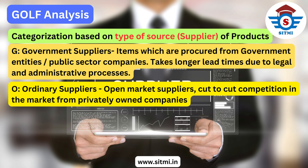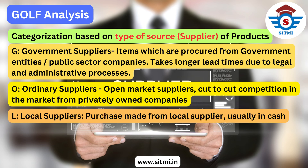The third type of source is L, which stands for local suppliers. These are purchase sources made instantly from local suppliers, usually in cash or blanket order transactions in the industry.